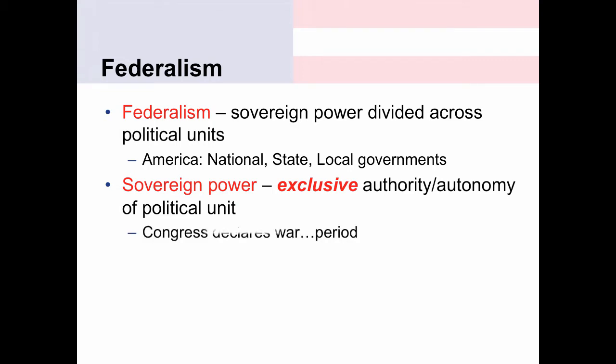Here's an example. The Constitution gives Congress the power to declare war. Only Congress has the power to declare war. A state — for instance, Wyoming — could not declare war with Canada. If Wyoming ever did decide that, they don't have the power because the Constitution only gives that authority to Congress. So the power to declare war is a power granted only to the national government — that's what we mean by exclusive.